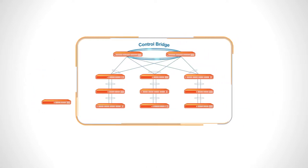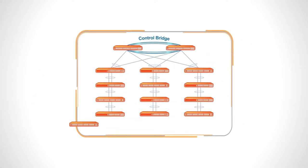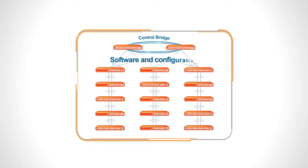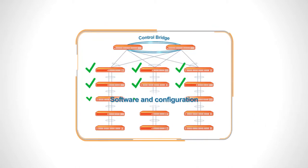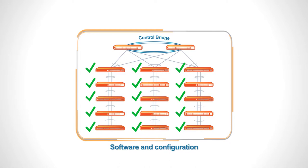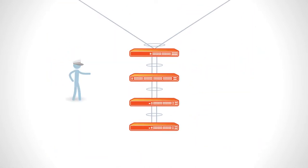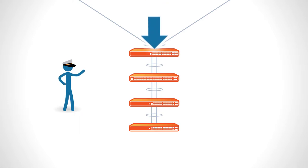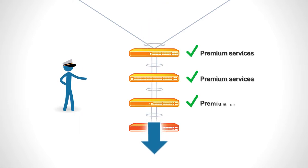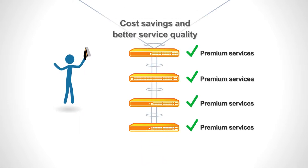This fabric is self-forming—add a switch anytime you want. Switches get software and configuration automatically from the network, eliminating manual provisioning steps. All switches, even entry-level switches, inherit advanced premium services from the control bridge for cost savings and better service quality.